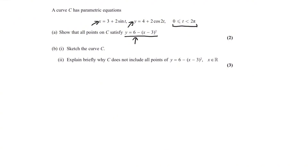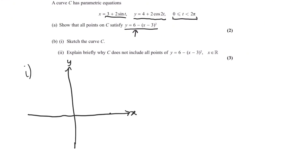Based on that, x and y will have minimum and maximum points. Looking at x, what dictates its value is 3 plus 2 sine t, so sine t is what's dependent on t. The minimum value will be when sine t equals minus 1, so the minimum value of x is 3 plus minus 2, which is 1. Similarly, we can find the maximum value of x — the maximum is when sine t equals 1, giving x equals 5.